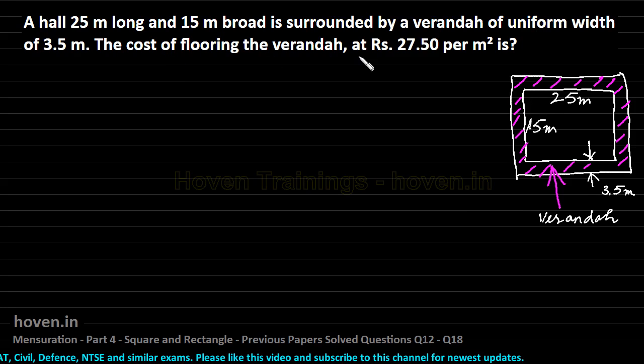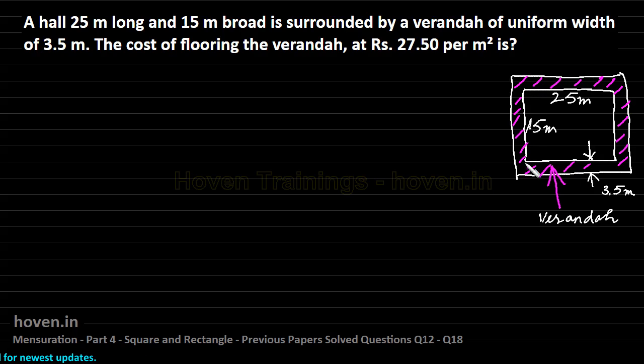The cost of flooring the veranda, some tiles may have to be applied here. The cost of flooring the veranda at 27.5 per square meter. This square meter will tell us that we are to deal with the area basically. So we have to first of all find the area of this shaded portion and multiply it by 27.5 to obtain the cost.